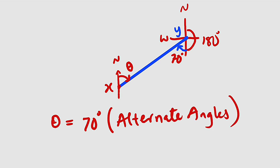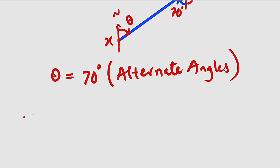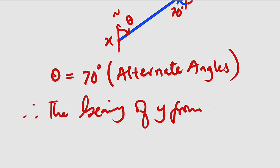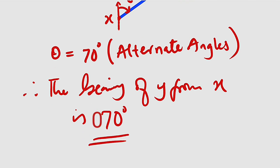Alternate angles are equal. Therefore the bearing of Y from X is 70 degrees. As simple as that. So I have just answered your question. Now let us move on to our main problem for today.